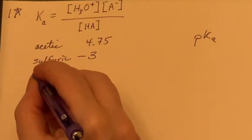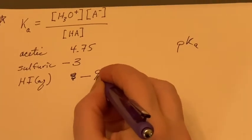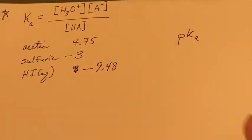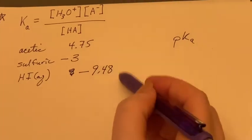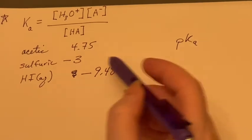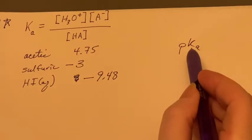And the hydroiodic acid, minus 9.48. So when you see a strong acid, it would actually end up having a negative value for the pKa.